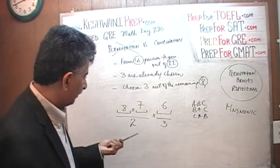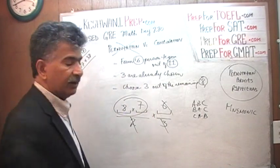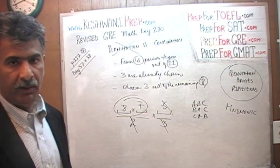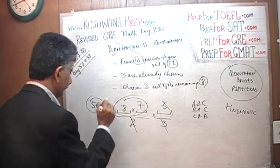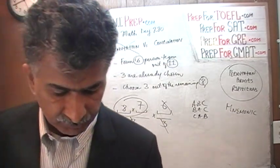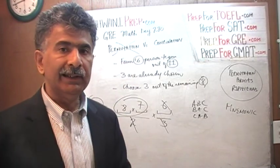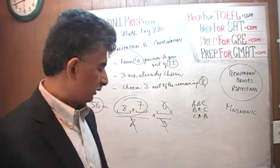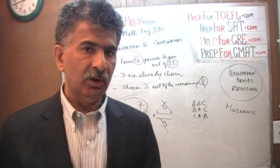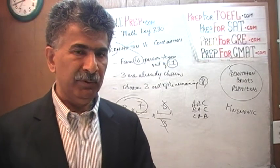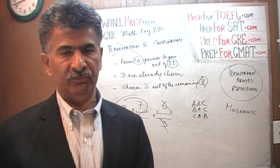We have 8 times 7 times 6, divided by 2 times 3, which is 6. The 6 cancels out, and the answer is 7 times 8 — 7 sevens are 49, plus 7 is 56. There are 56 different ways of picking 3 people out of the remaining 8 people. We had 11 to begin with, 3 were already chosen, leaving 8 people, and we needed to pick 3 more. There are 56 ways.